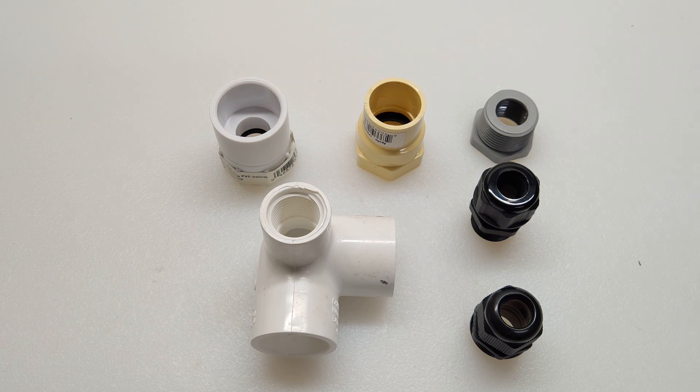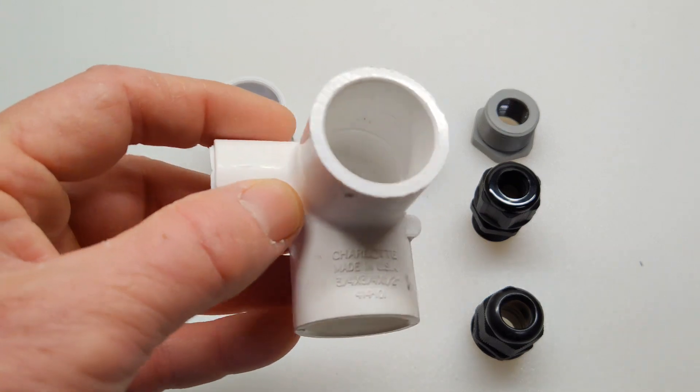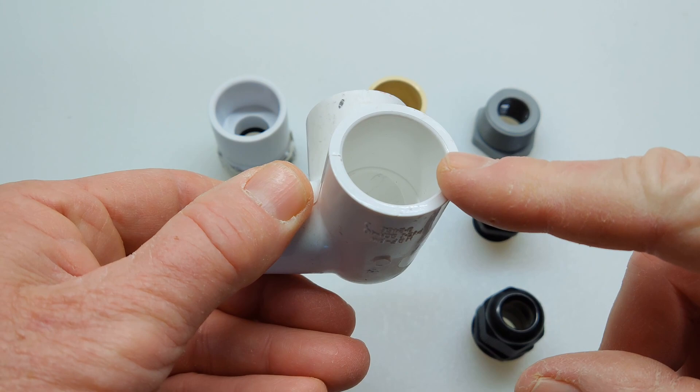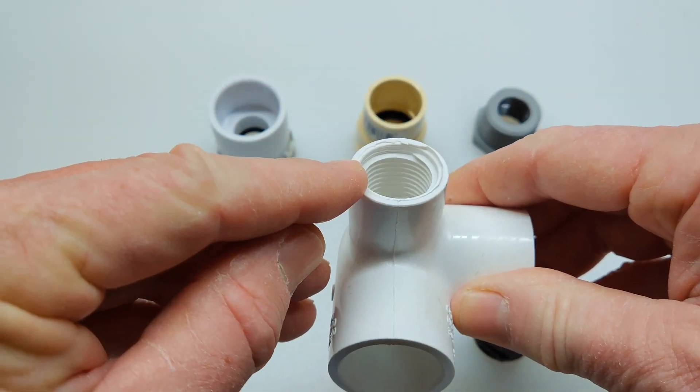These are the main parts I'm going to be using in this project. I'm just going to call this a double 90, and it's a PVC 3¼ slip-in on one end, 3¼ slip-in on another, and a 1½ inch female thread reducer.